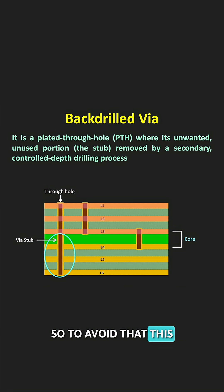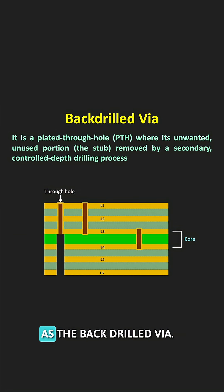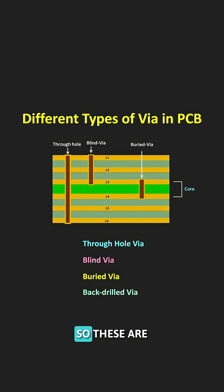To avoid that, this unused stub is removed with the help of back drilling. Such Vias are known as back drilled Vias. These are the different types of Vias used in modern multi-layer PCB design.